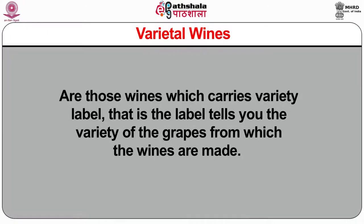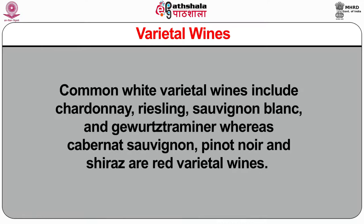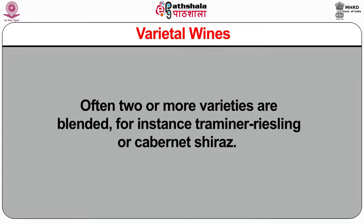Varietal wines are those wines which carry a variety label — the label tells you the variety of grapes from which the wines are made. Common white varietal wines include Chardonnay, Riesling, Sauvignon Blanc and Gewürztraminer, whereas Cabernet Sauvignon, Pinot Noir and Shiraz are red varietal wines. Often two or more varieties are blended, for instance Traminer-Riesling or Cabernet-Shiraz. Generic wines are named after long-established European areas — many North American and Australian wines are labelled as Clarets, Burgundy, Chablis, Chardonnay, Graves, Hock and even Champagne. A generic wine should possess the distinctive color, flavor and aroma of its own.